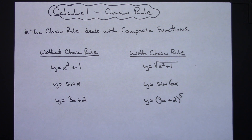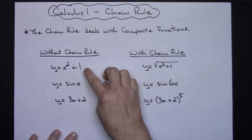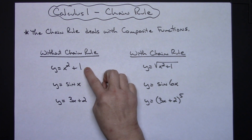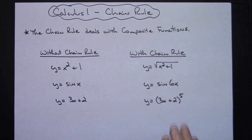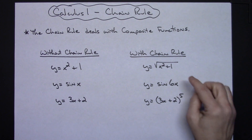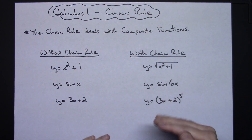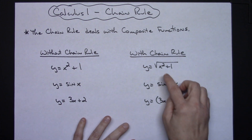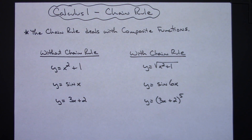In this video I'm going to introduce the chain rule, which is very common in a Calculus 1 class, right after you learn how to do your basic product rule and quotient rule. Chain rule basically deals with composite functions. Prior to chain rule, you could only take the derivative of functions such as x squared plus 1, or sine x, or 3x plus 2. Once we introduce the chain rule, you'll be able to handle composite functions like the square root of x squared plus 1. It's very important that we can identify the inside and the outside of that function.